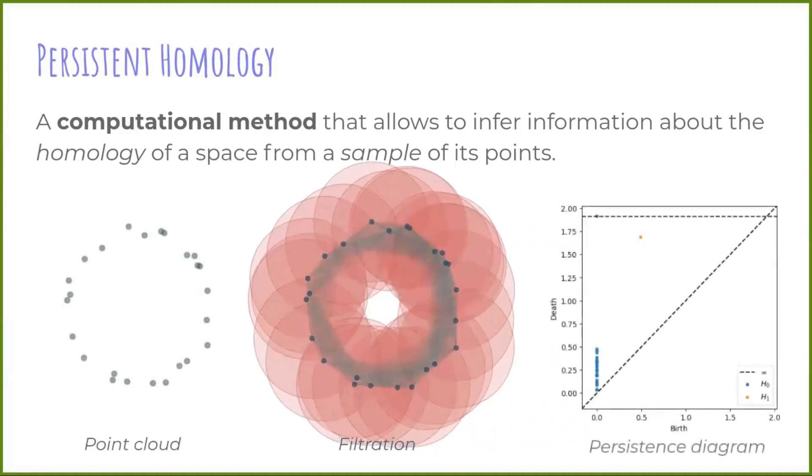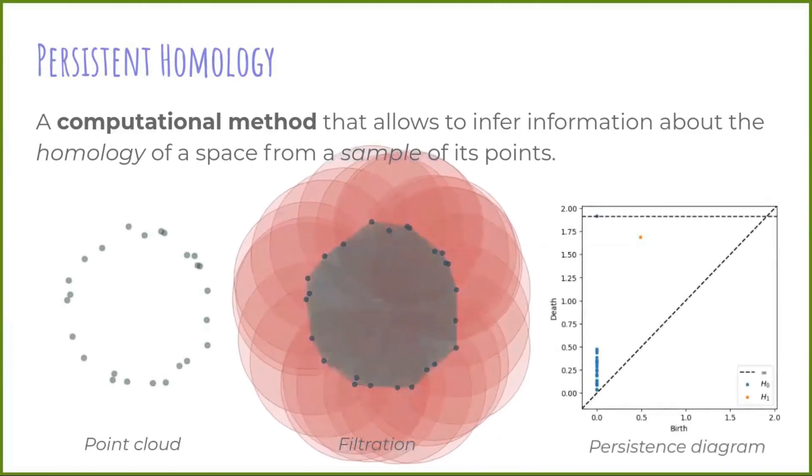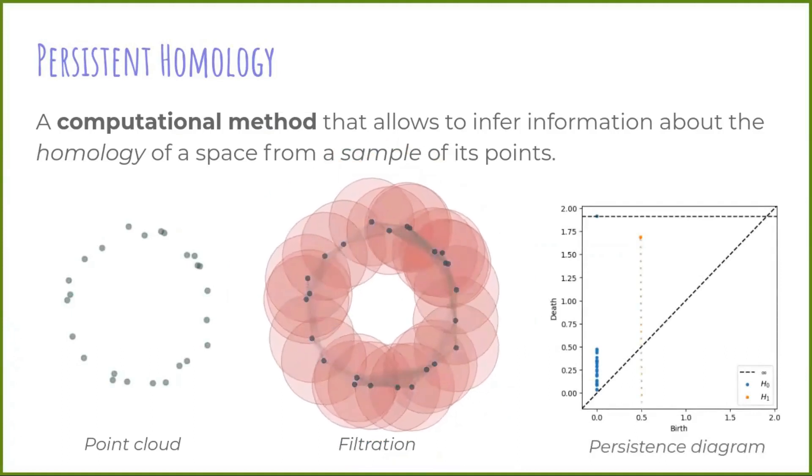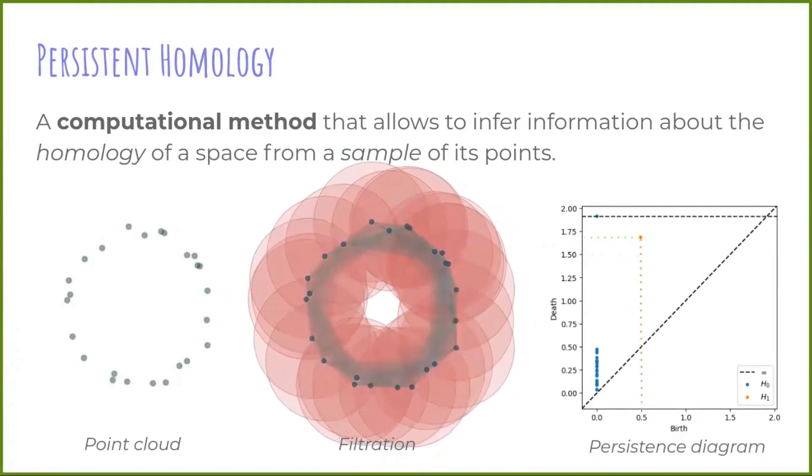Finally, summarize all this information in a diagram called persistence diagram. Each point in this diagram represents the birth and the death of a generator in homology.